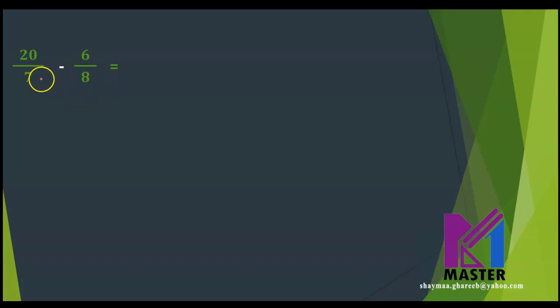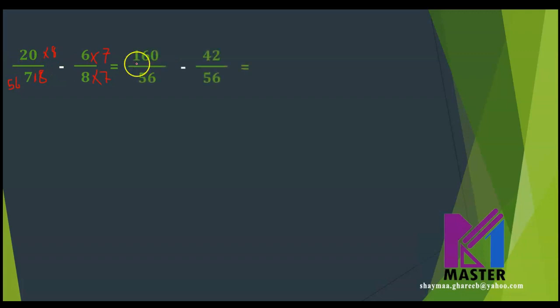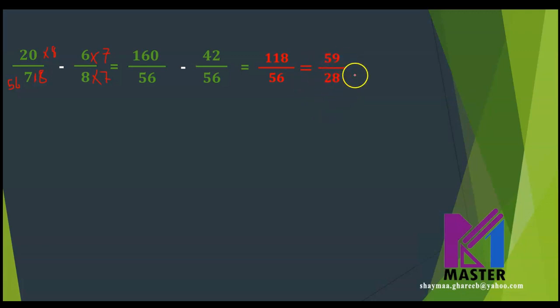20 over 7 minus 6 over 8. The common multiple between 7 and 8 is 56. I will multiply the first one by 8 up and down, and the second one by 7 up and down to get 56 in the denominator. The first fraction will be 20 times 8, which is 160 over 56, minus 42 over 56, giving 118 over 56. Can I simplify? Yes — I divide up and down by 2, giving 59 over 28. Can I write this as a mixed number? Yes, because this is an improper fraction. How many 28s are in 59? Two, with remainder 3. So the answer is 2 and 3 over 28.